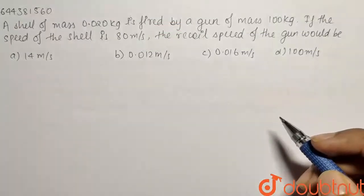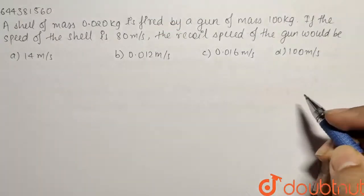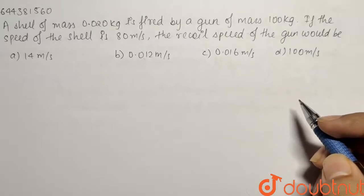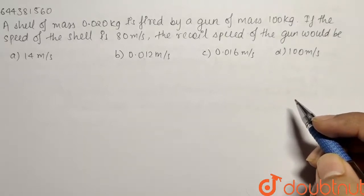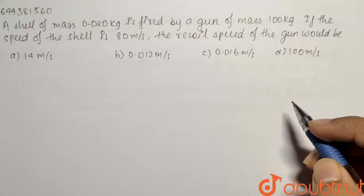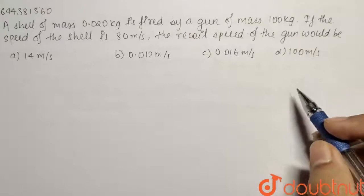Here we have a question from Newton's laws of motion. A shell of mass 0.020 kg is fired by a gun of mass 100 kg. If the speed of the shell is 800 meter per second, the recoil speed of the gun would be.